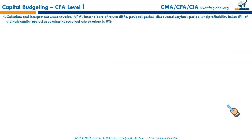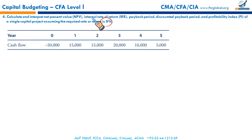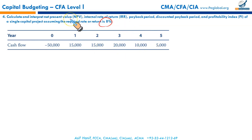The next learning outcome asks us to calculate and interpret net present value, internal rate of return, payback period, discounted payback period, and profitability index of a single capital project. Let's take an example: a project involves a $50,000 initial investment, with inflows in years 1 through 5. We will calculate NPV, IRR, payback, discounted payback, and profitability index for this project.